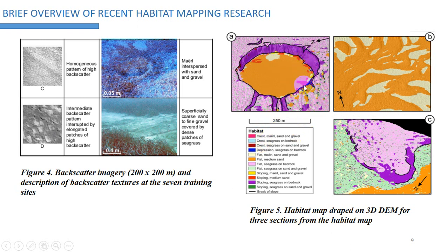You can see here it has very fine detail. With the red color, they can identify which locations are gravel. They can also identify flat and sloping features, and even distinguish what kind of sand, gravel, or seagrass is on the background. It's a very detailed habitat map.